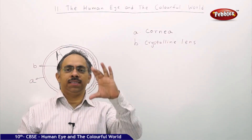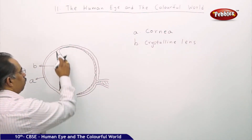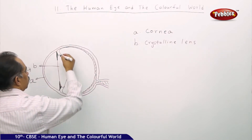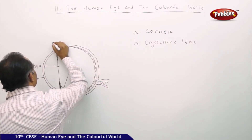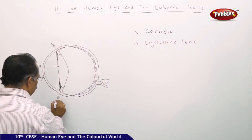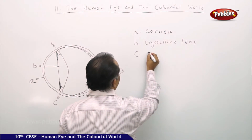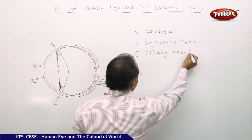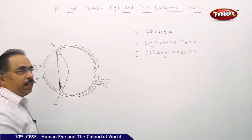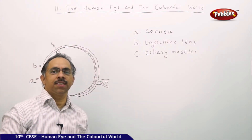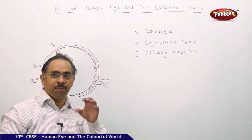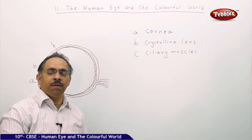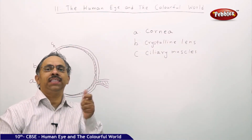To hold the lens in position, we have two things — something like a lens stand. These are called the ciliary muscles. The function of the ciliary muscles is to hold the lens in position, and the other important aspect is that they are responsible for changing the focal length of the lens.